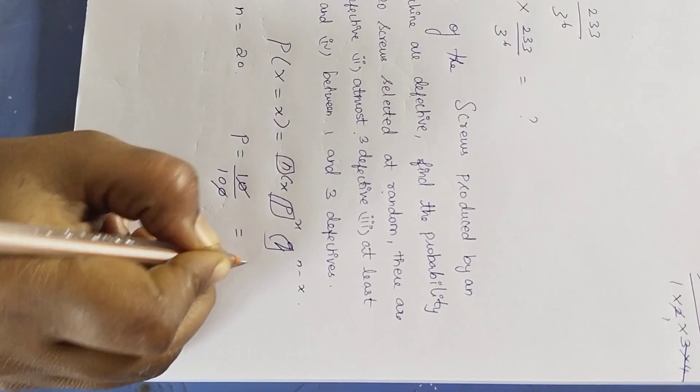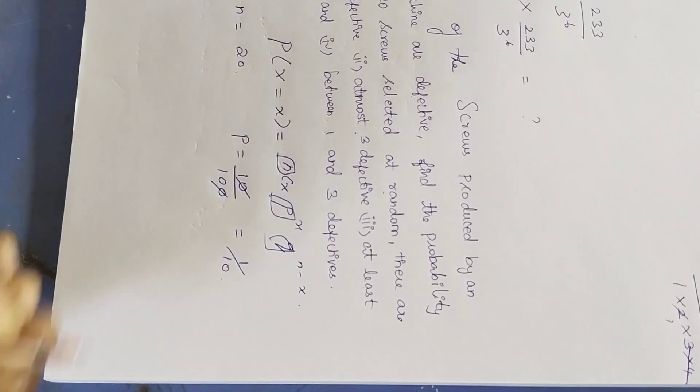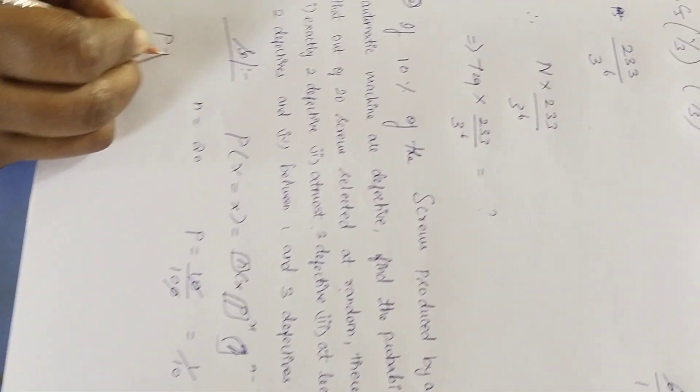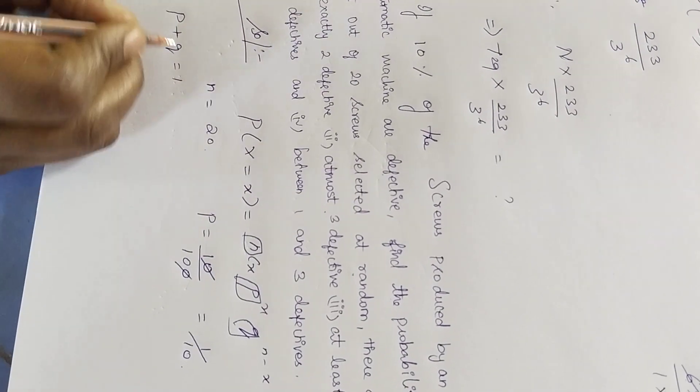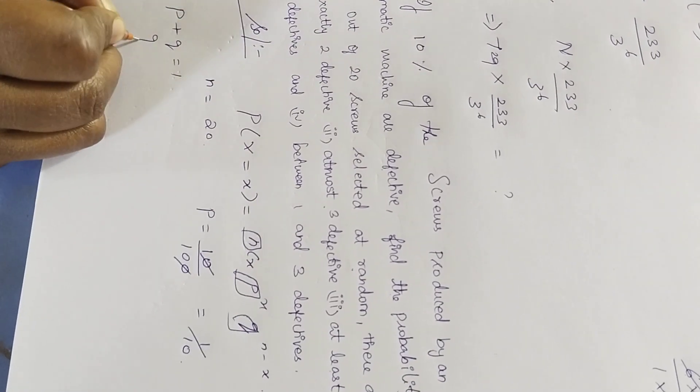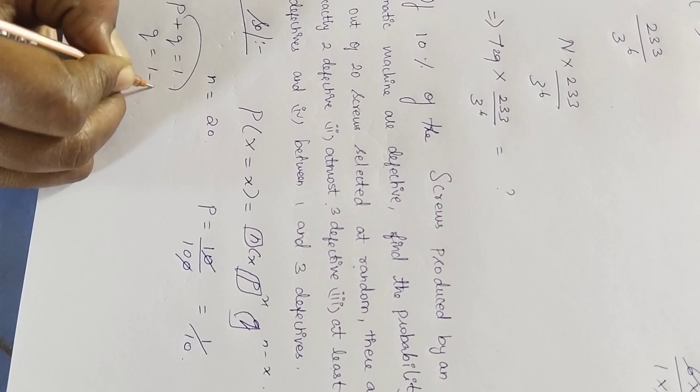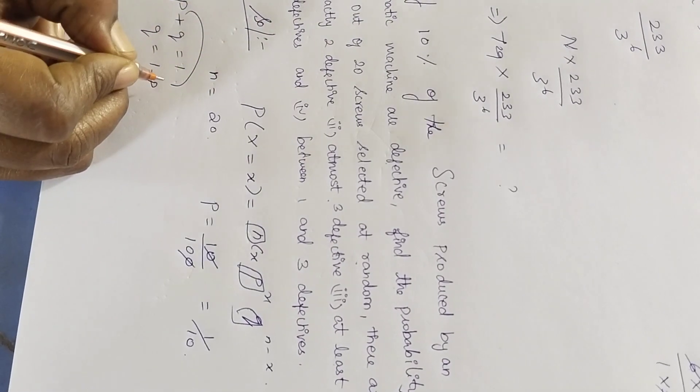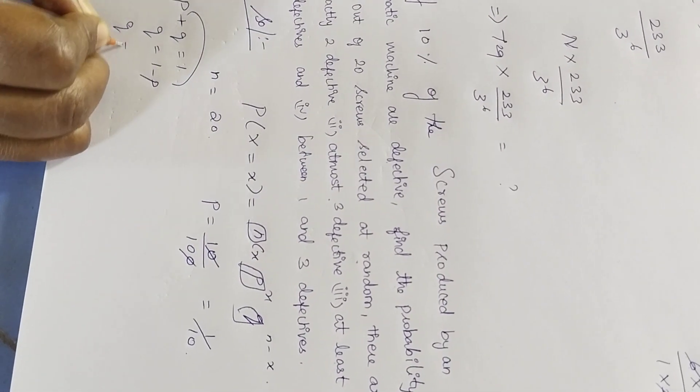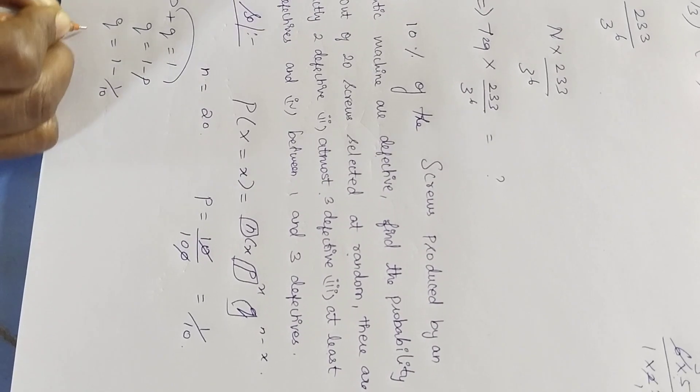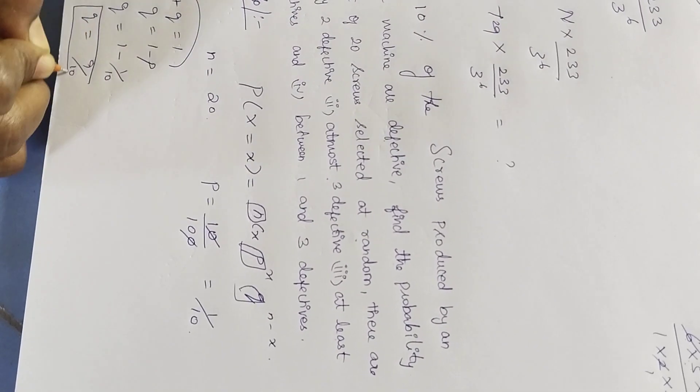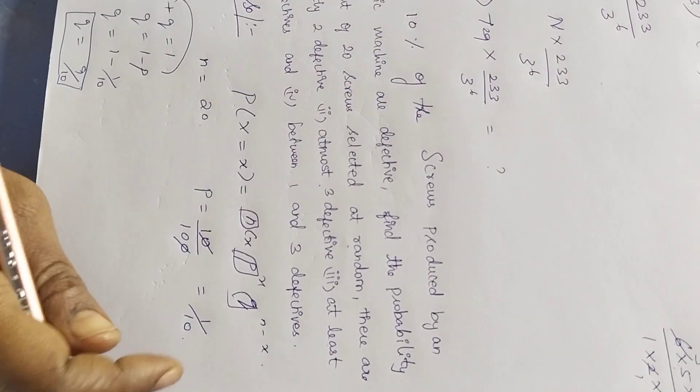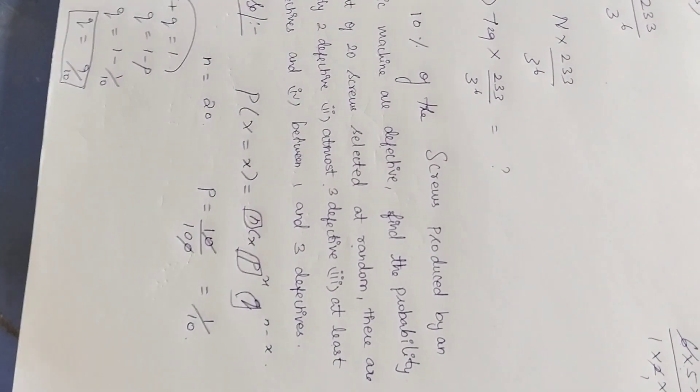We know the p-value is random. q will be 1 minus p, n equals 20, q equals 1 minus 1 by 10, q equals 9 by 10. p is known, q is known, n is known.